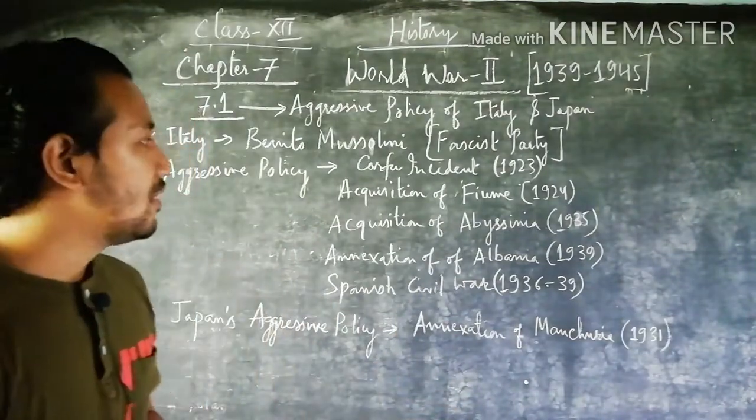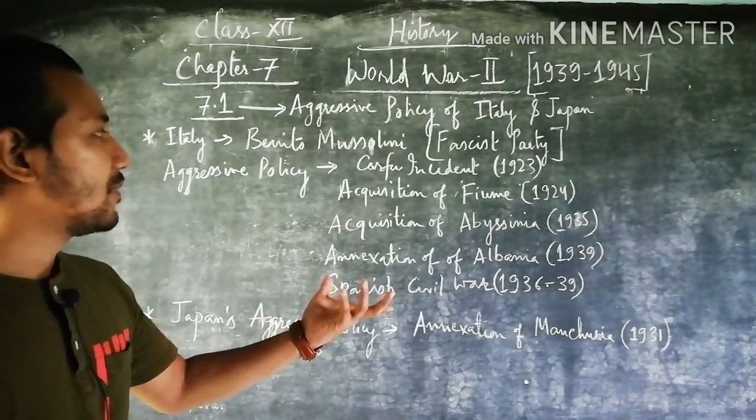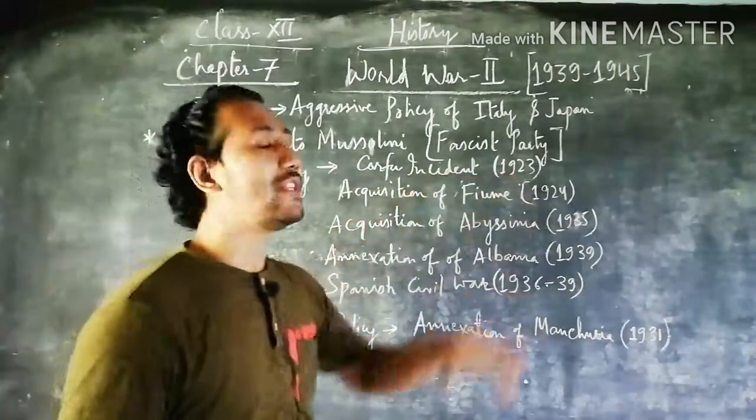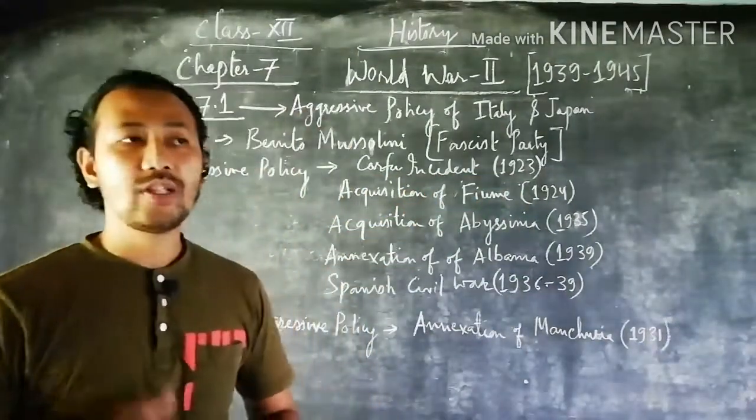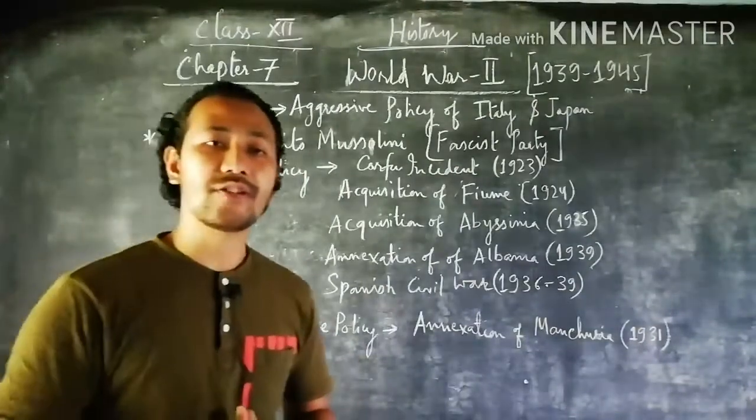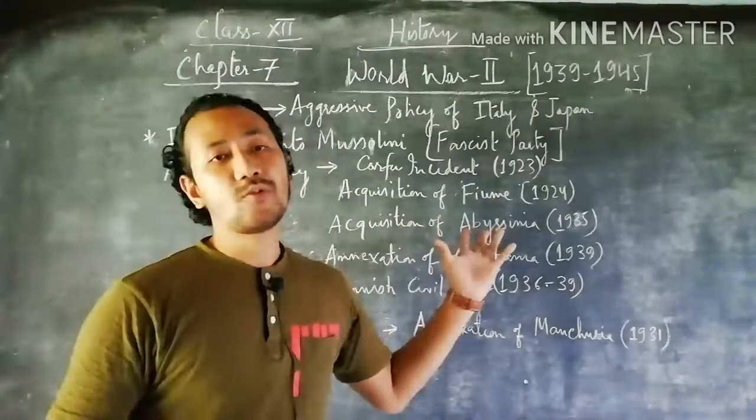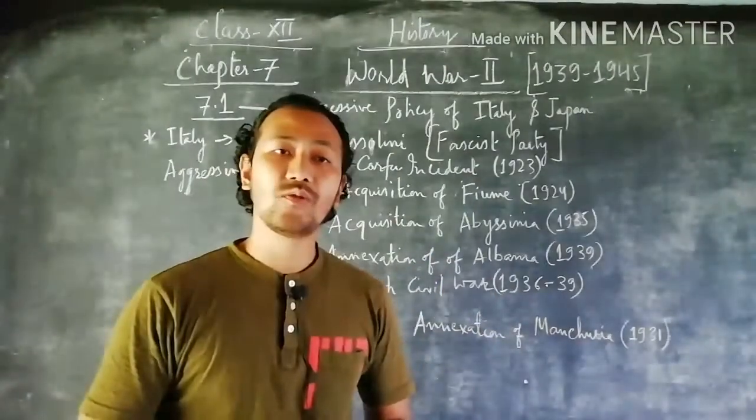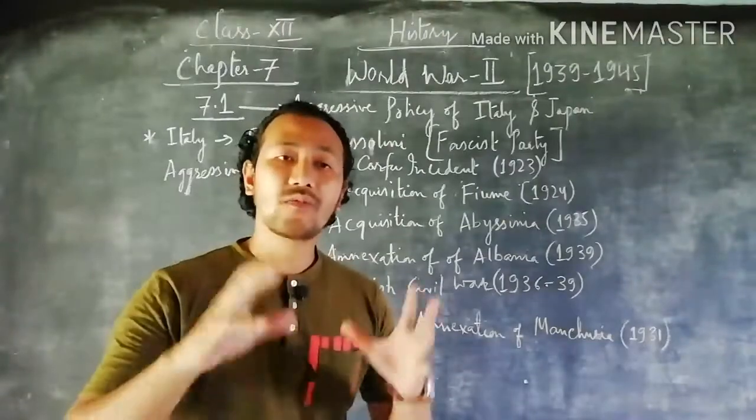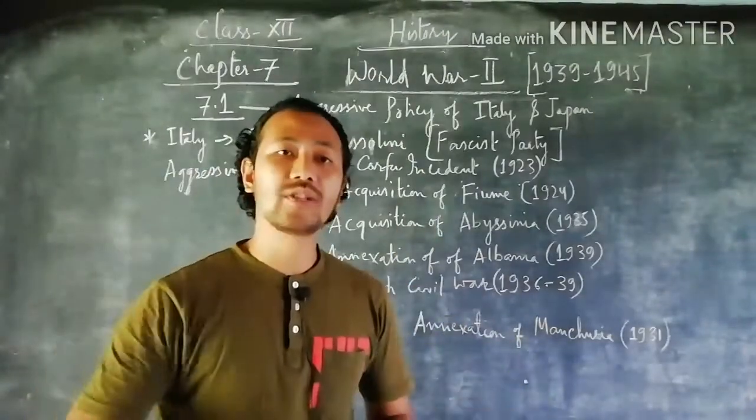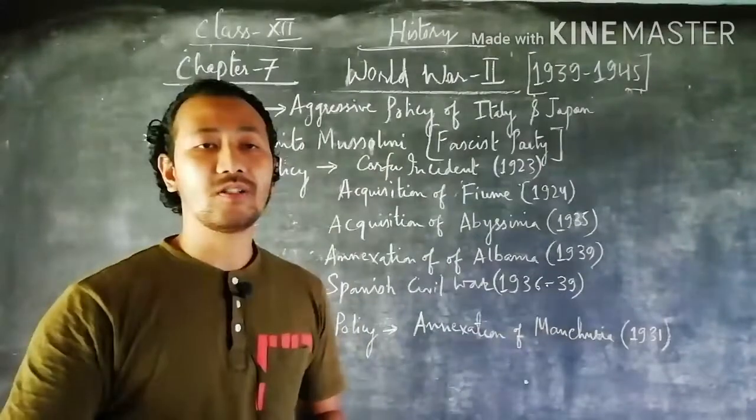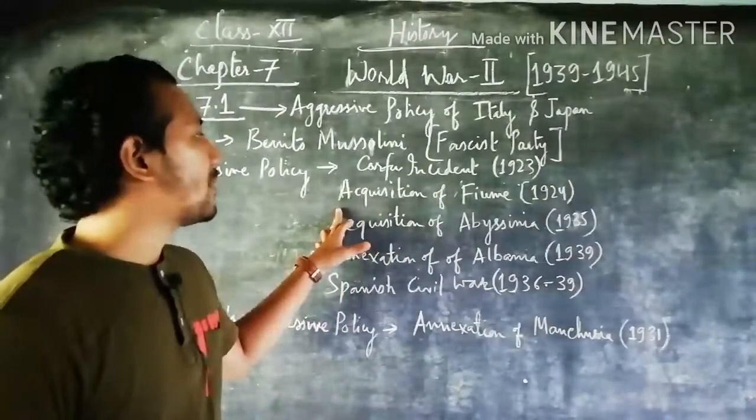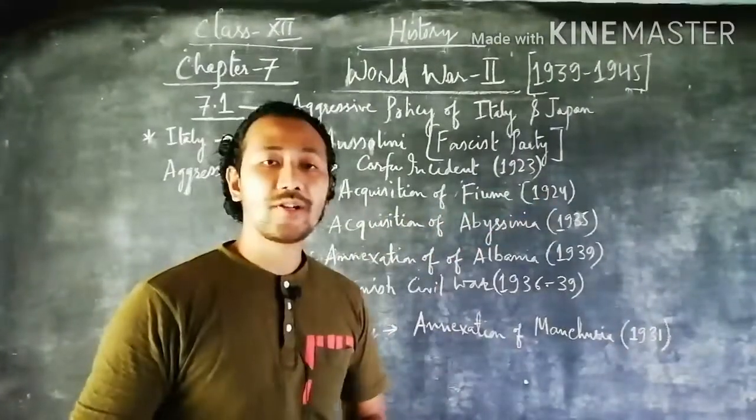First we see the aggressive policy of Italy, talking about the Corfu incident which occurred in the year 1923. In the Corfu incident, Italy under Benito Mussolini took hard steps, making programs and invasions to capture the Corfu area. Second, we talk about the acquisition of Fiume in the year 1924.